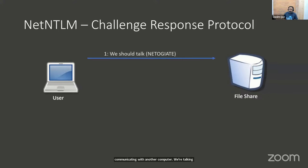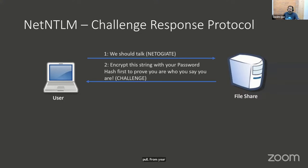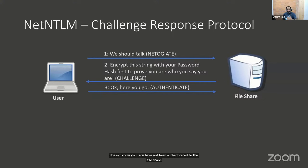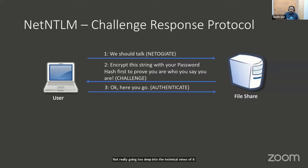The file share does not really know you, so it says 'let's first authenticate — here's a challenge for you to solve.' That challenge is a random string, sometimes including a timestamp, that you have to encrypt with your password hash — NT hash, LM hash — and send it back to the file share. This is the NetNTLM hash right here, and this is where we come in and can snag that.